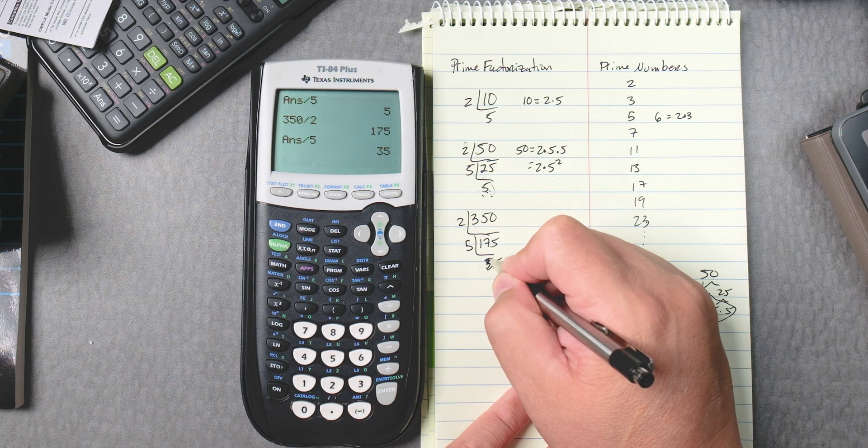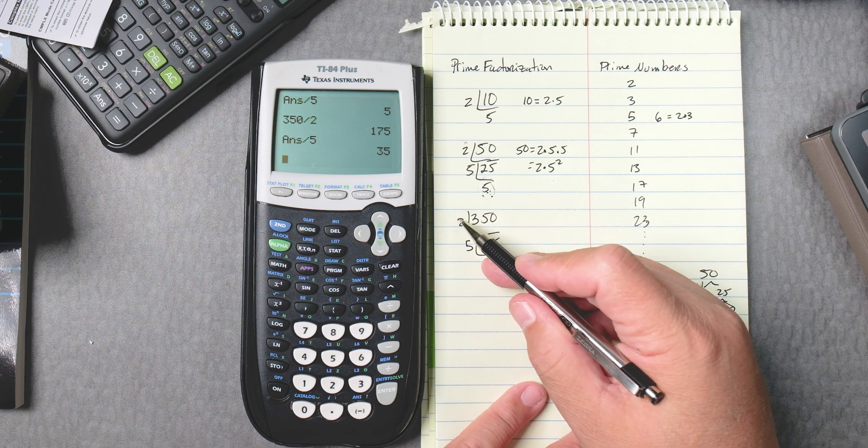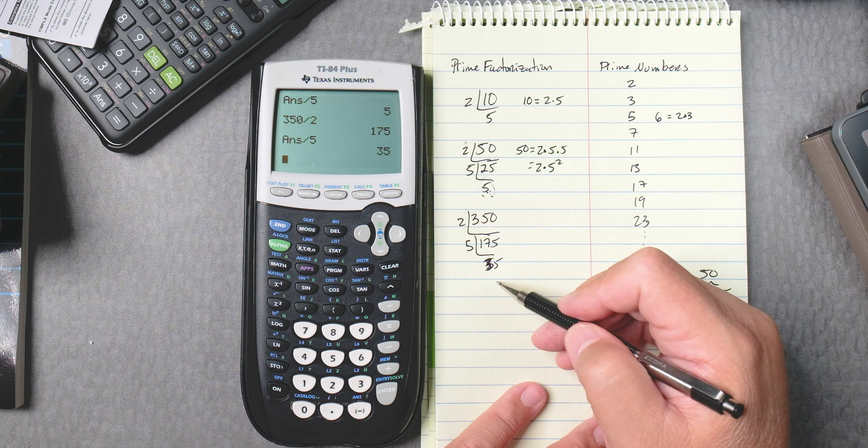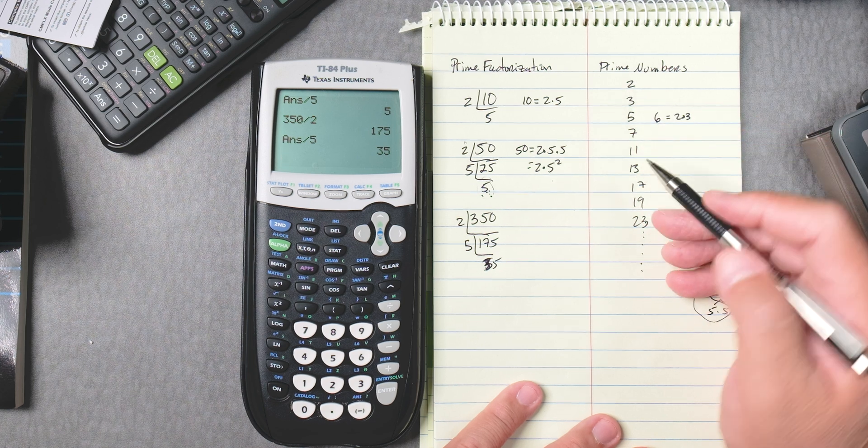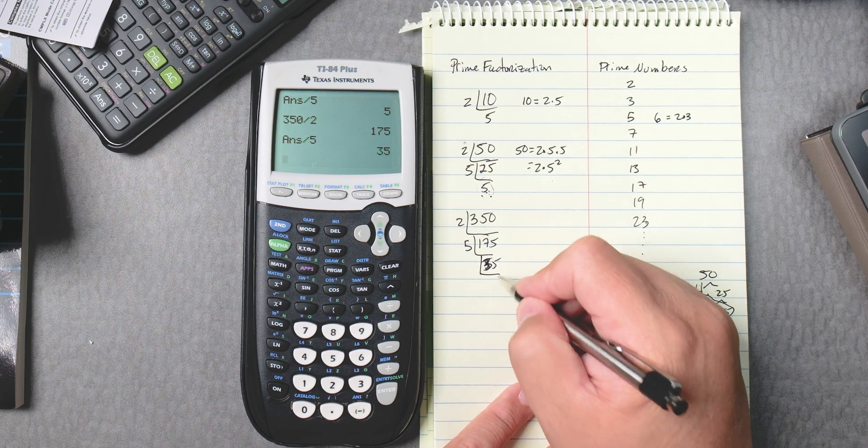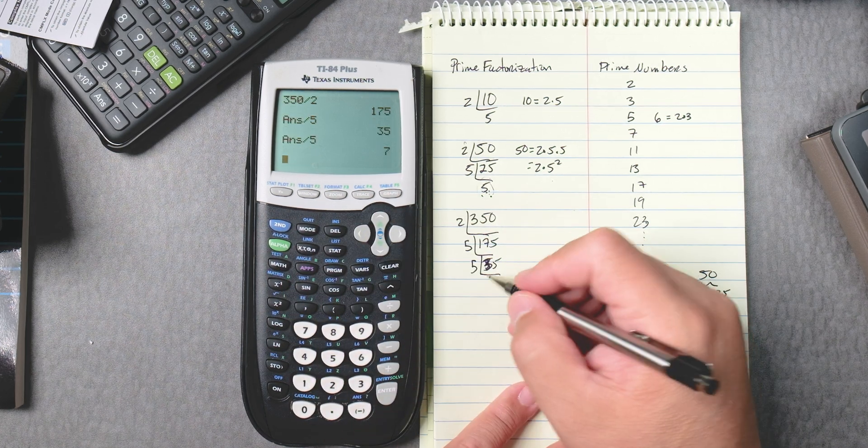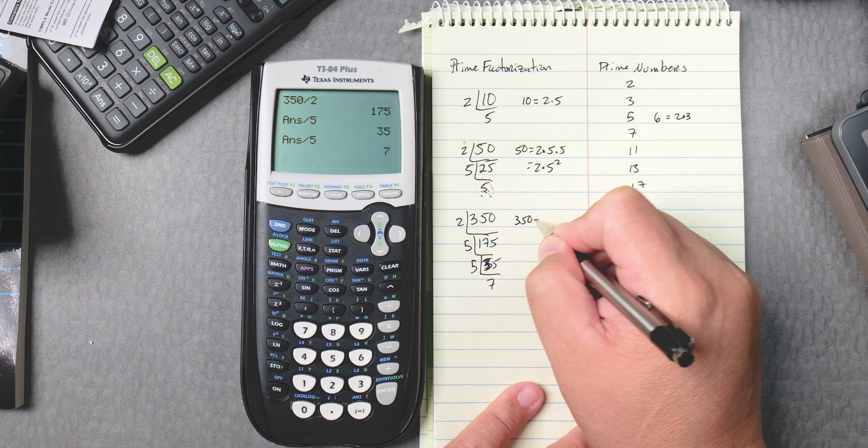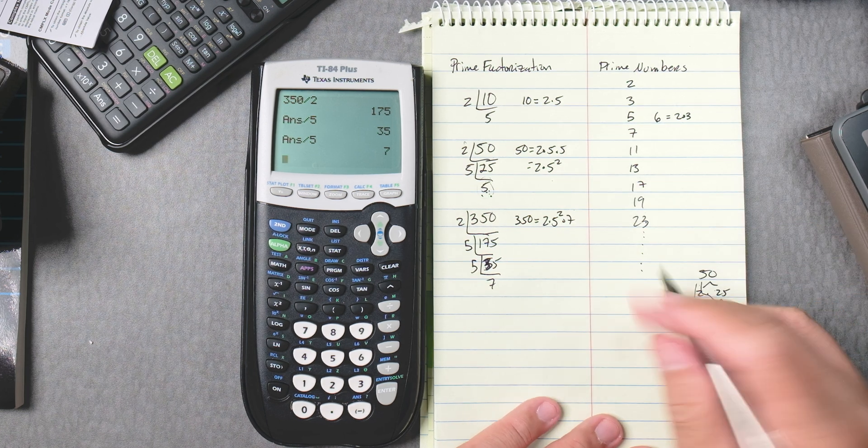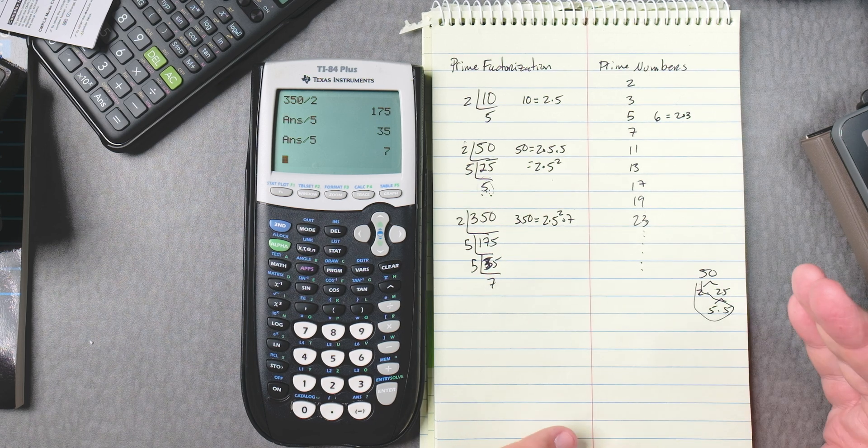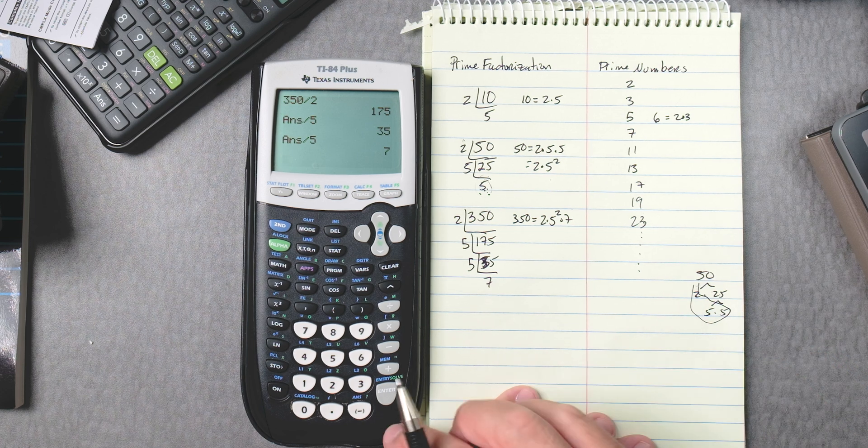One other thing, you could have started with 5 here, 5 goes into 350 and so forth, but eventually you would have ended up using 2. So it's always good to start with the smaller numbers. 35 here, I know 5 will go into 35. We can divide by 5, 7. So 350 equals 2 times 5 squared times 7. 350 can be broken down. 350 is a composite number, can be broken down into primes, and that's the prime factorization using the TI-84.